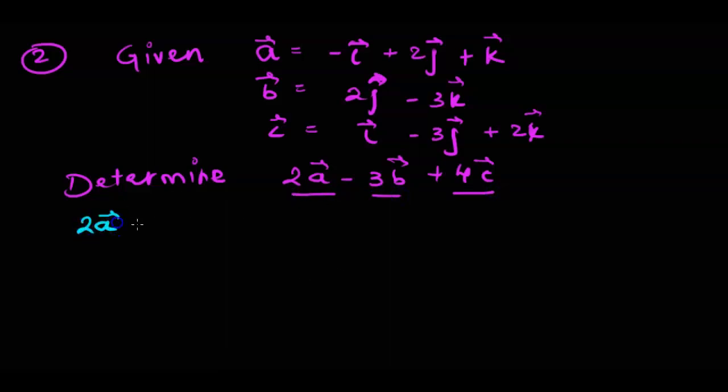So let's first find out all of these individual values. Let's find out 2a first. We know 2a is nothing but 2 scalar multiplied by vector a. We are given vector a as this and we would multiply 2 with this vector. We have to do distributive property. No number here means it's 1. So 2 times negative 1 is negative 2. 2 multiplied by 2 is 4j. 2 multiplied by k we get 2k.